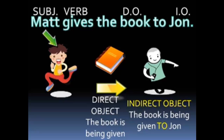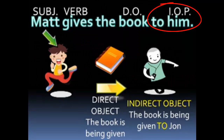Matt gives the book — that's our main action. But John is sort of a third party; it's being given to John, he's indirectly receiving the giving. John is a noun, so in this sentence John is the indirect object noun. When we replace 'to John' with 'to him,' the indirect object noun becomes an indirect object pronoun. A pronoun is a word that replaces a noun. So instead of 'gives the book to John' (indirect object noun), now we say 'gives the book to him' (indirect object pronoun).